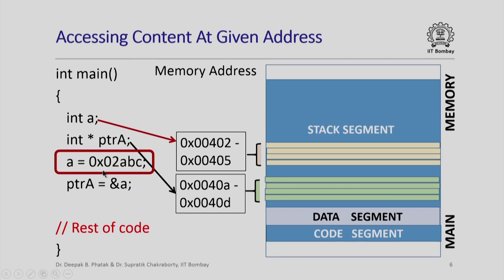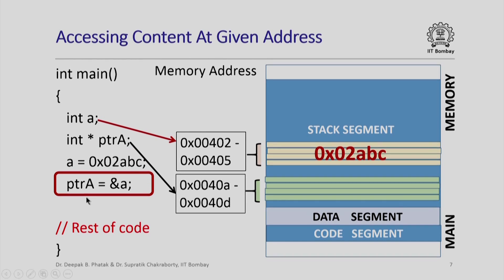When I execute the statement assigning 0x0ABC to A, that value gets copied into the memory locations reserved for variable A. After that, when I execute the statement assigning ampersand A to pointer A, I find the address of the memory locations corresponding to variable A. Since there are 4 memory locations for variable A, we pick up the address of the first of these — hex 00402 — and store it in the memory reserved for pointer A.